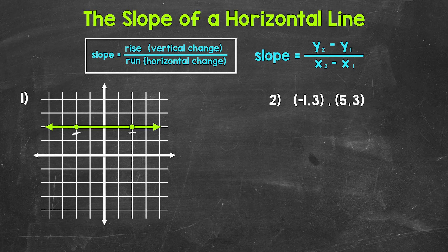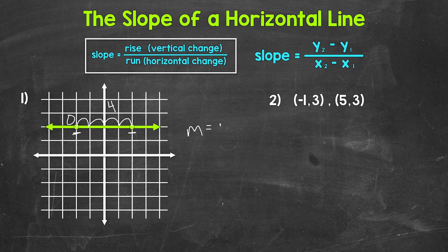Let's start with the rise, going from the left point to the right. There isn't any vertical change — the line just goes straight across. So the rise is zero. Now for the run, the horizontal change: we go over one, two, three, four units to get to the other point. So our run is four. Slope equals rise over run, so our slope equals zero over four.